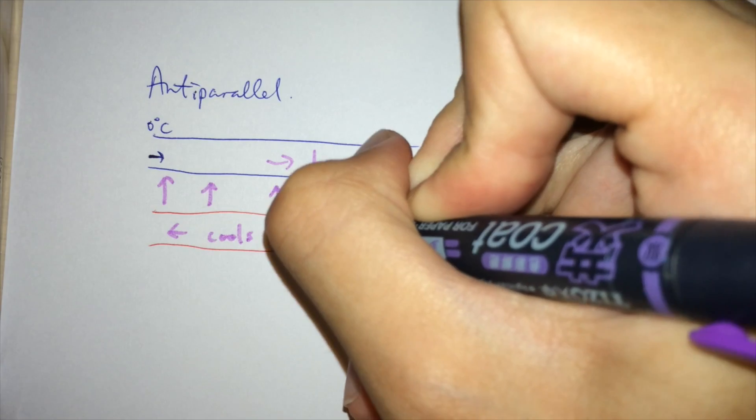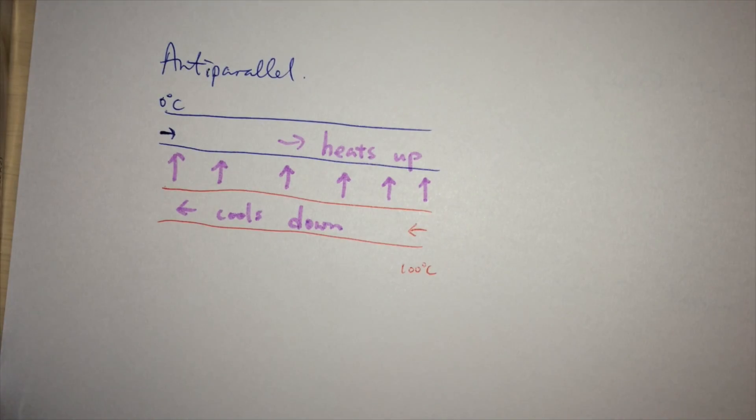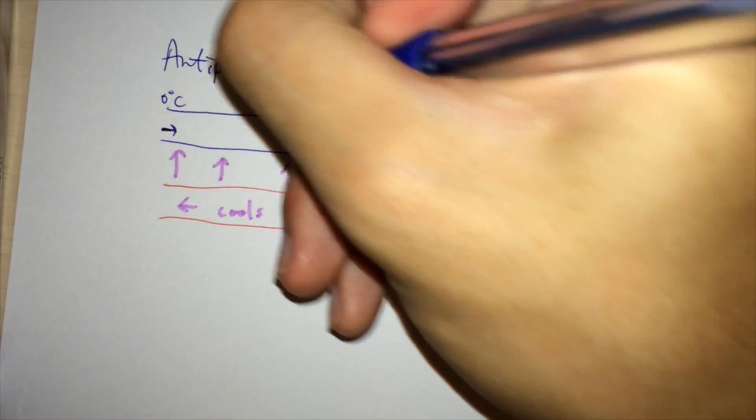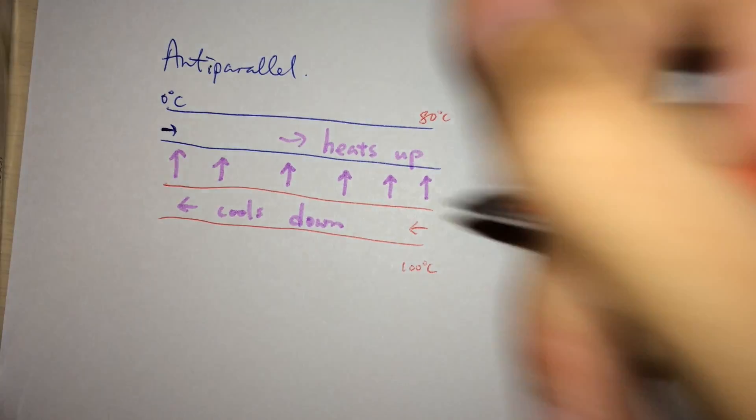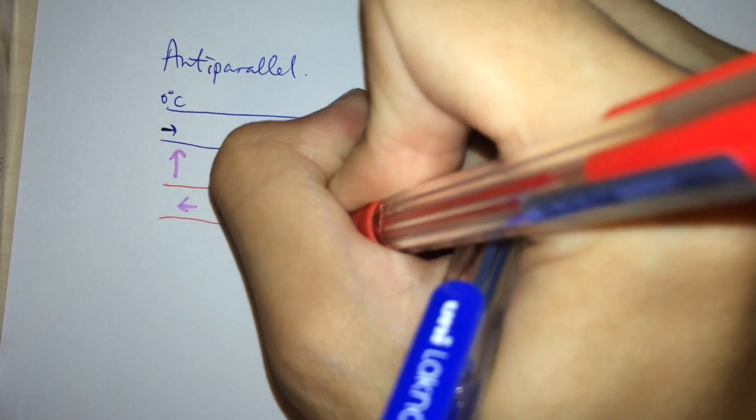Like 100 degrees would meet 80 degrees here, then 80 meets 60, 60 meets 40, 40 meets 20, and 20 meets 0.